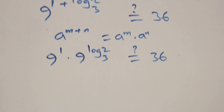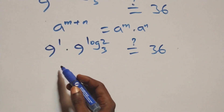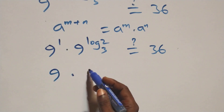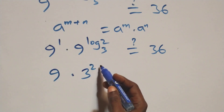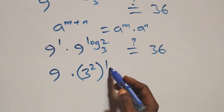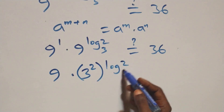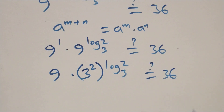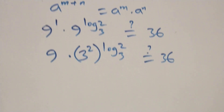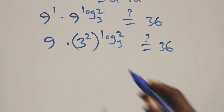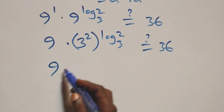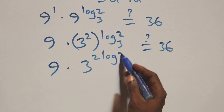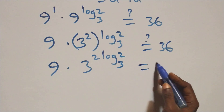We apply the exponent rule for a raised to power m plus n: this is the same as a raised to power m times a raised to power n. So we get 9 raised to power 1 times 9 raised to power log 2 base 3, equal to 36. We can express 9 as 3 squared, so the power multiplies and this becomes 9 times 3 raised to power 2 log 2 base 3, equal to 36.